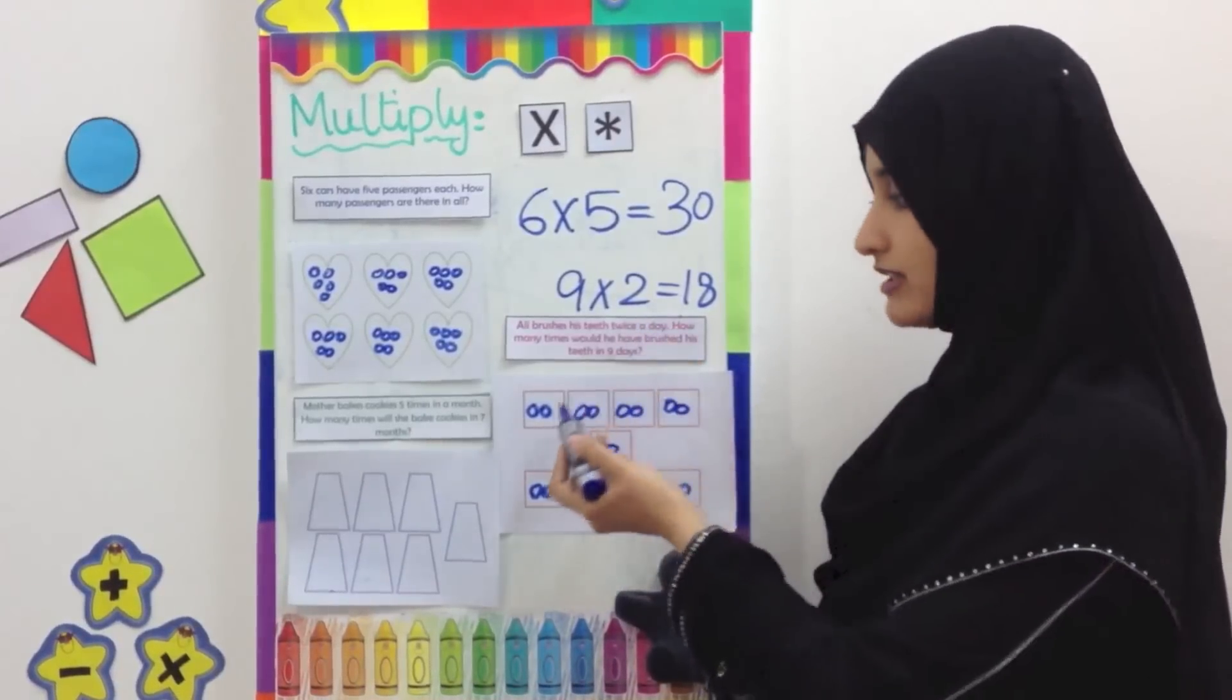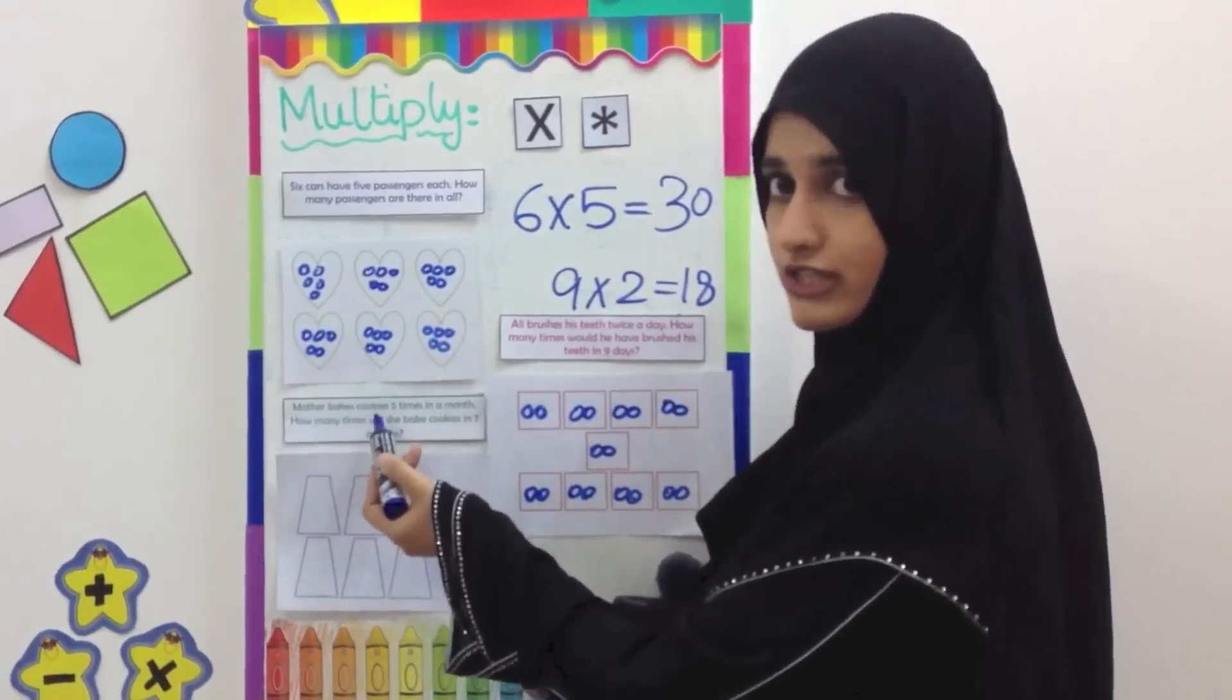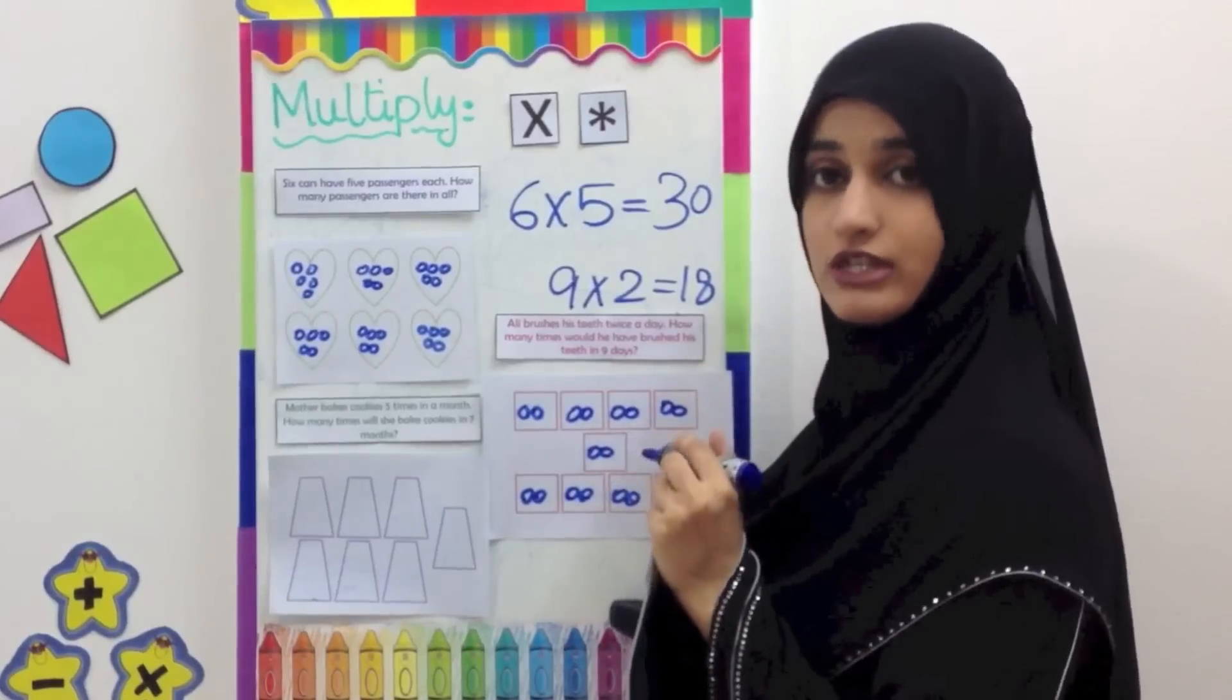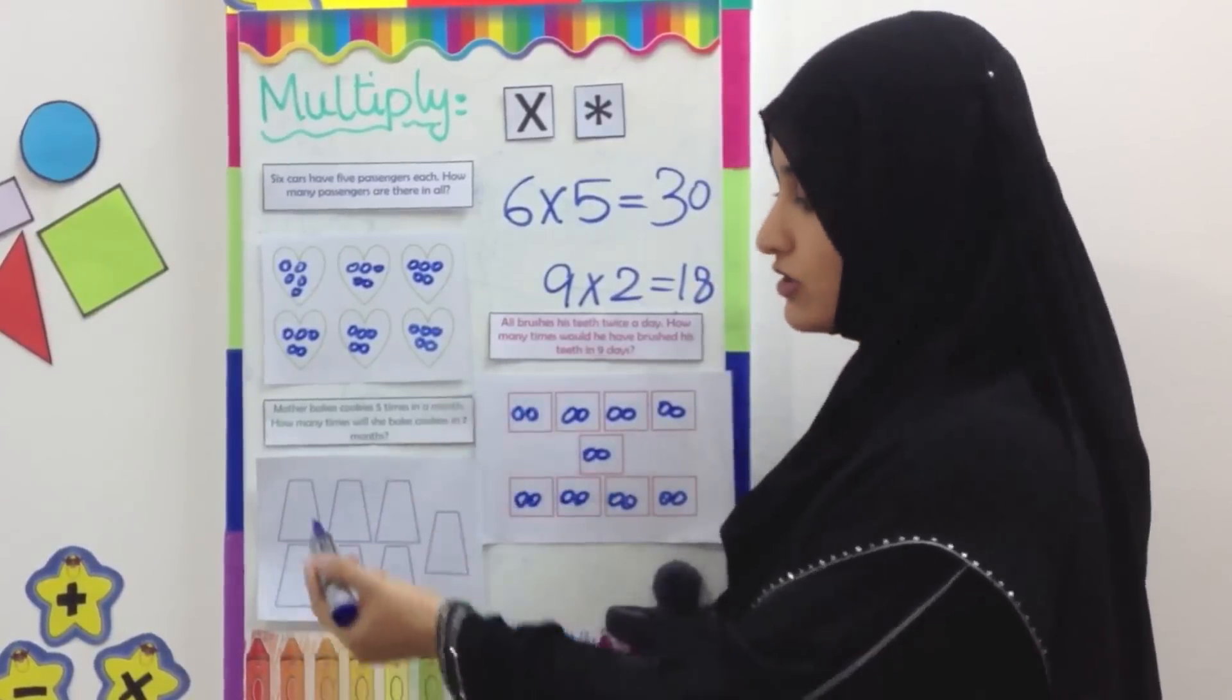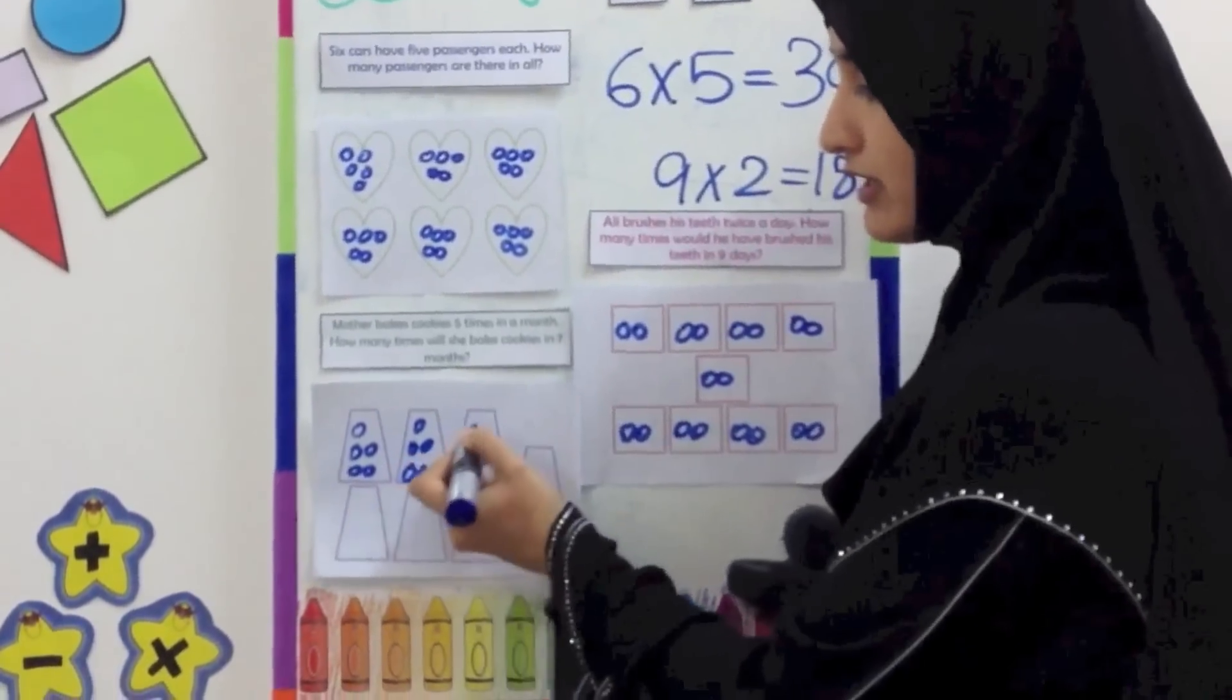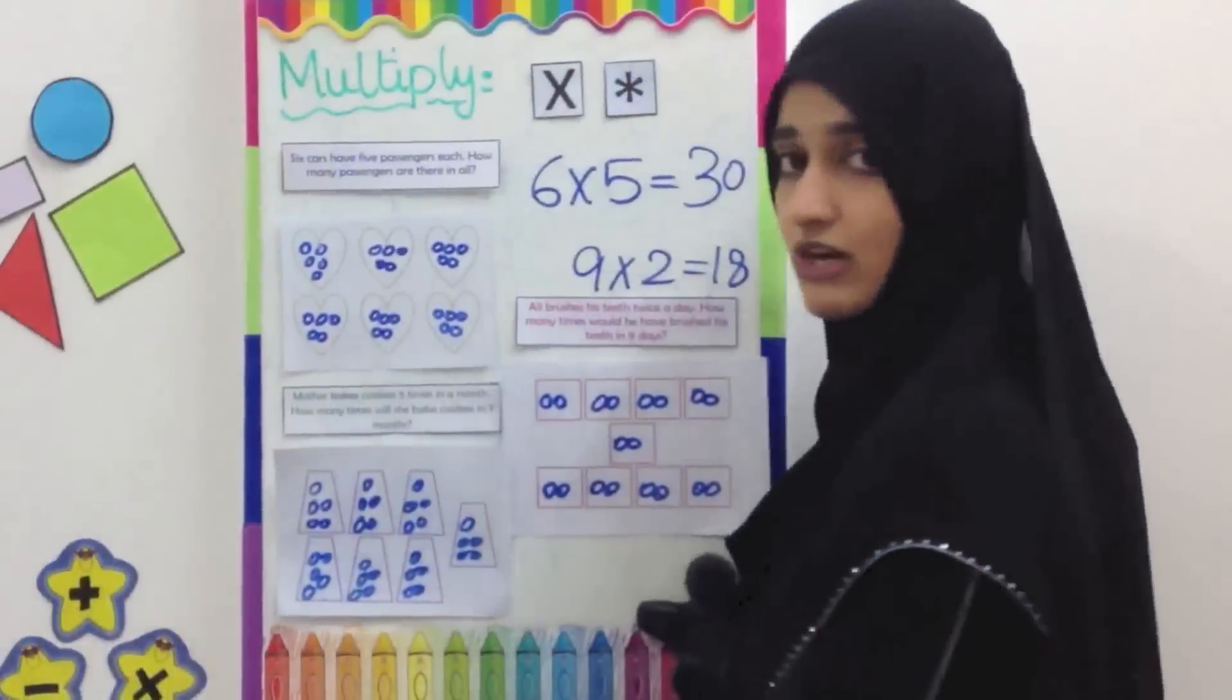Mother makes cookies five times in a month. In one month she is making cookies five times. How many times will she bake cookies in seven months? So the first thing is we know that in one month she is baking five times. We draw five in each set. Then we count the total. You're going to count in fives.